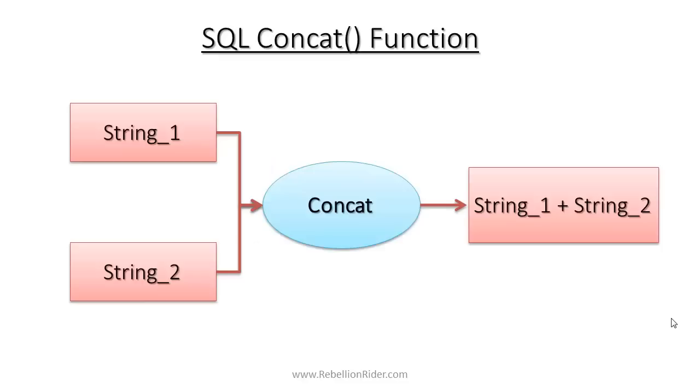SQL Concat function concatenates two separate character strings into one character string. Let's see the syntax. Note here that SQL Concat function takes only two arguments at a time. This SQL Concat function will return string 1 concatenated with string 2.